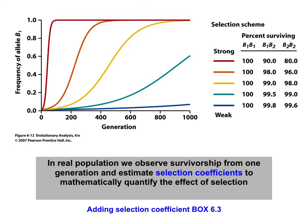Going through that process, in the next generation the B2 allele frequency drops from 40% to around 33.25%, and the B1 allele increases. Generation after generation, you see a continued reduction of the B2 allele until it is eventually weeded from the population. The figure shows how quickly an allele can be removed depending on selection strength: red represents strong selection, blue represents weak selection. The stronger the selection, the more quickly the population moves to the new equilibrium. We can mathematically quantify this using selection coefficients, as described in box 6.3 of the textbook.